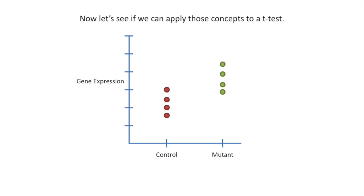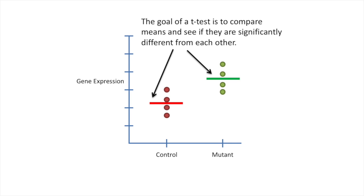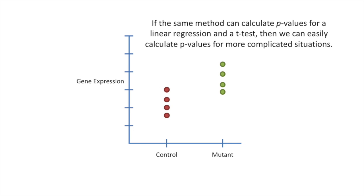Now let's see if we can apply those concepts to a t-test. In this specific example, we're going to be comparing gene expression between control mice and mutant mice. Mutant mice are just normal mice that have a specific gene that's been knocked out and is no longer functioning correctly. The goal of a t-test is to compare means and see if they are significantly different from each other. If the same method can calculate p-values for a linear regression and a t-test, then we can easily calculate p-values for more complicated situations.